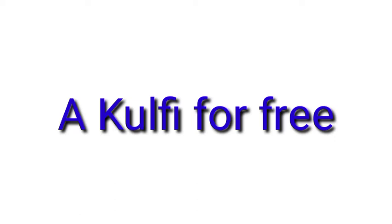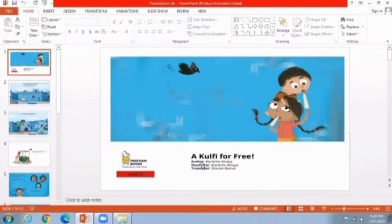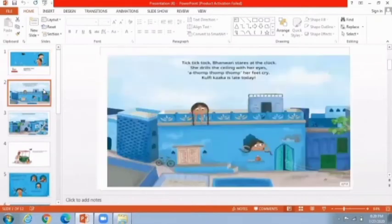Let's understand the structure and elements of story with the help of a famous story named 'Kulfi for Free.' The main character in the story is a girl whose name is Bhavri. She is the protagonist and she is very simple, very intelligent, and very caring because she loves all her family members.